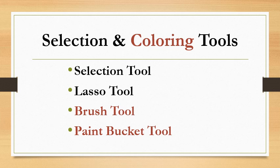Next is the paint bucket tool. Paint bucket tool aisi shapes ko color se fill kar sakta hai jo ya to empty ho ya pehle se hi kisi color se fill ho. Kisi bhi shape mein two types se color fill kar sakte hain: Number 1 is normal fill — isme hum kisi bhi shape mein ek single color fill kar sakte hain. Number 2 is gradient fill — isme hum do ya do se zyada colors and shades ko mix karke ek new shade form karke shape mein fill kar sakte hain.